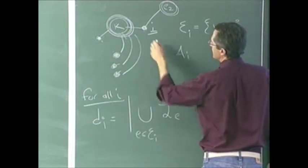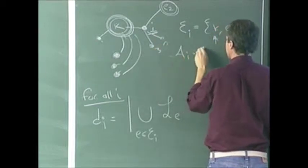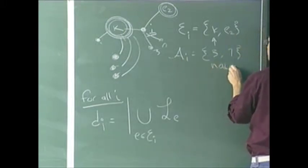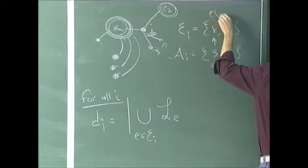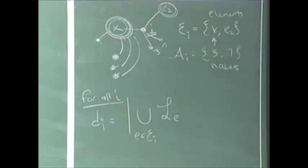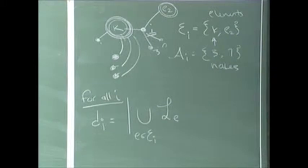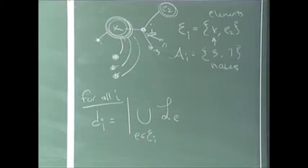Now I've got some data structure manipulations. Node i is represented by two lists: E sub i would be k and E2. And A sub i — say, nodes 3 and 7. So node i is adjacent to some other nodes and adjacent to some elements in the quotient graph. This quotient graph has two kinds of vertices: original nodes and clique representation objects called elements.